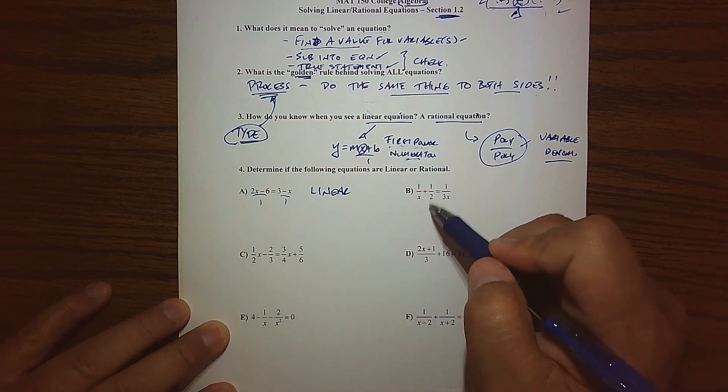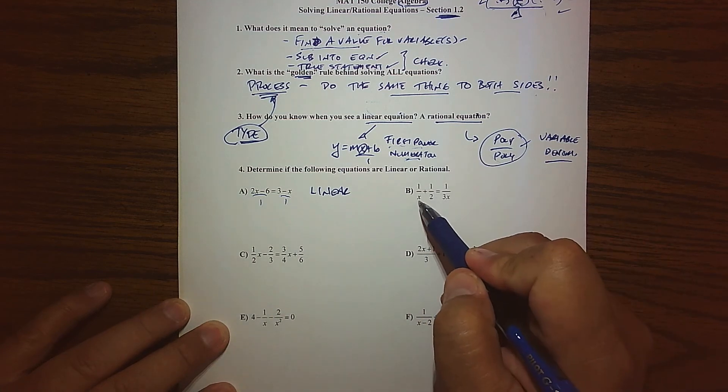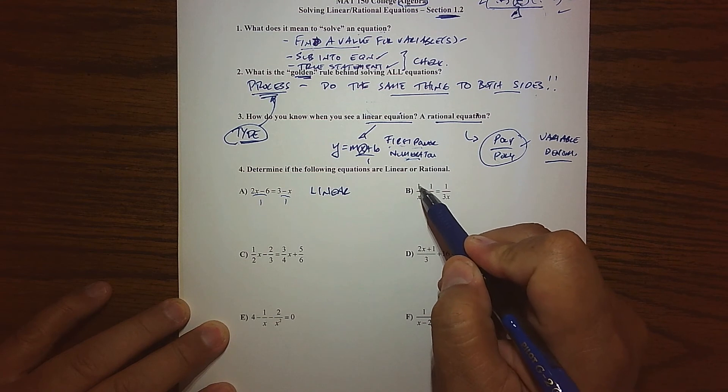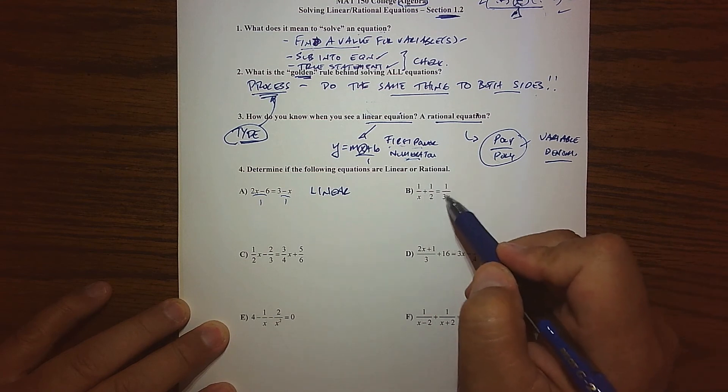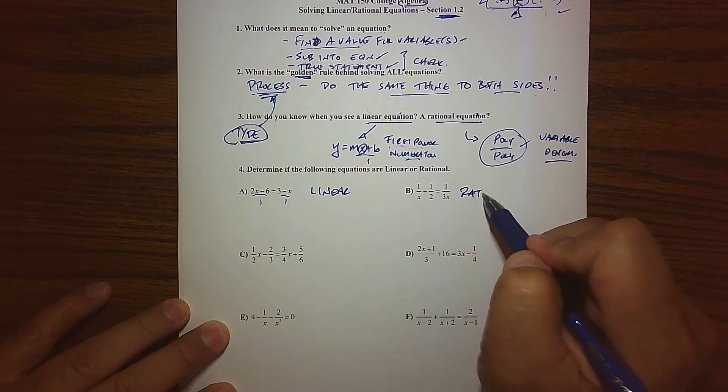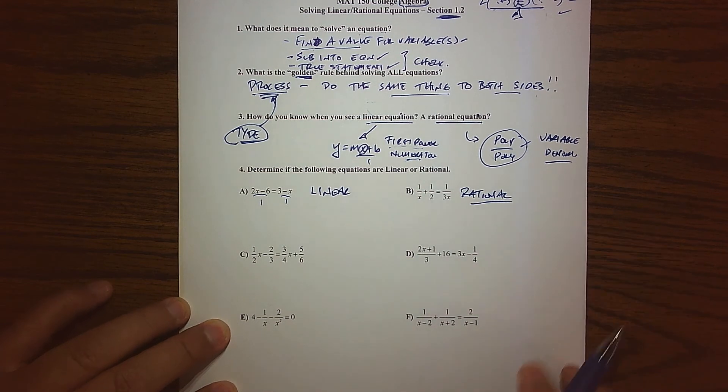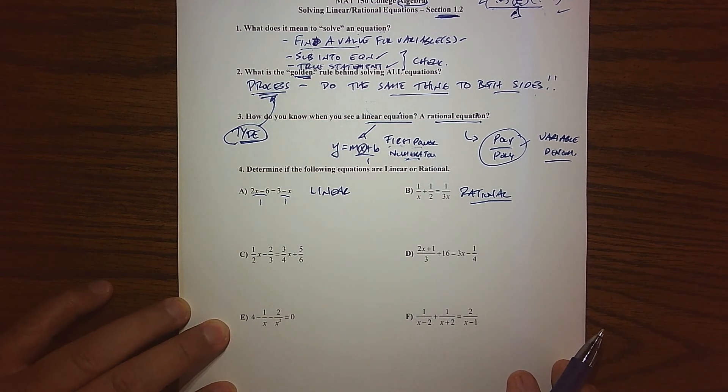Letter B, if we take a look at this, notice that the variable is down in the denominator. So I essentially have a poly over a poly. Have it a couple of times. So this fits the description of a rational equation. So that's what we have on that one.